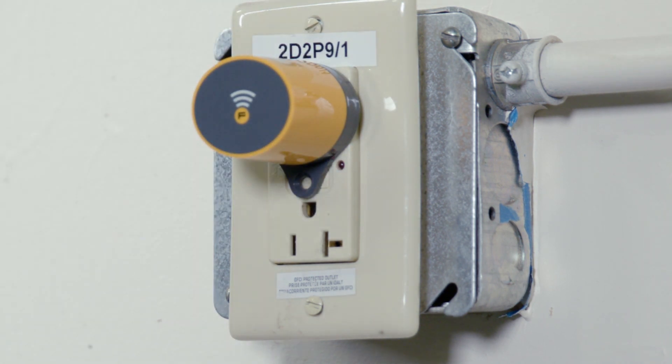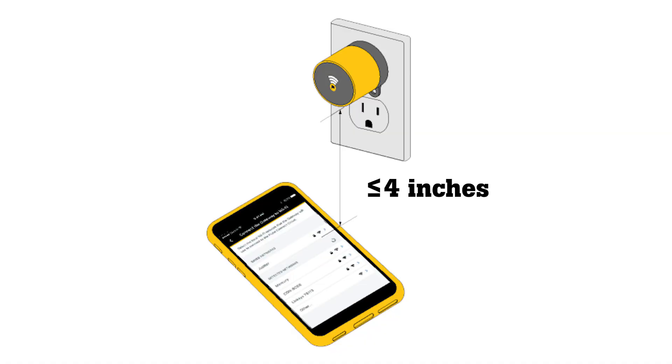You can move the gateway to another outlet after it's activated. Hold your smart device within 4 inches of the gateway and follow the prompts to connect to Wi-Fi.